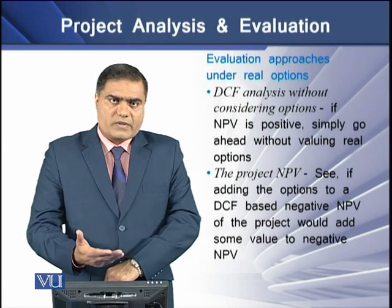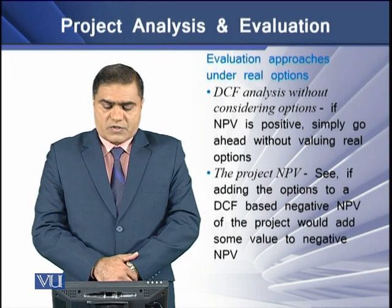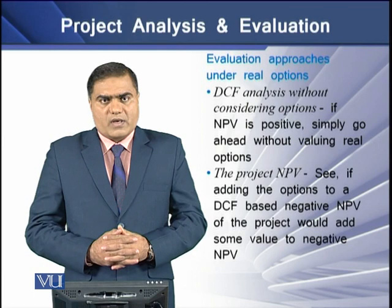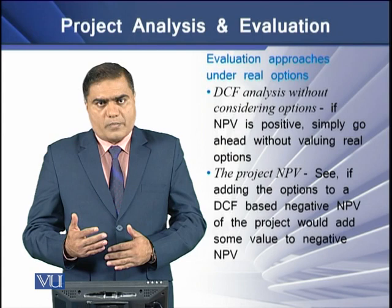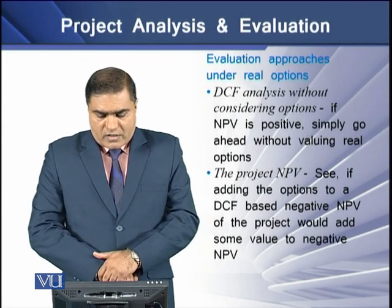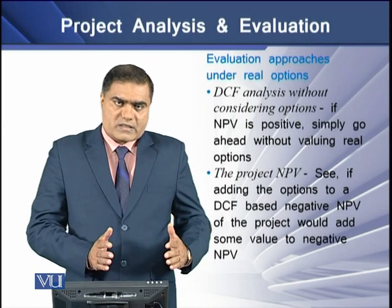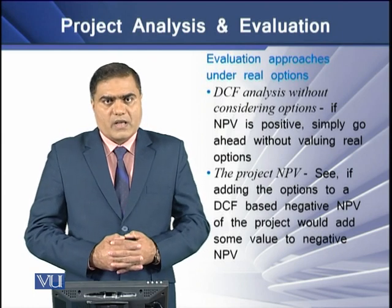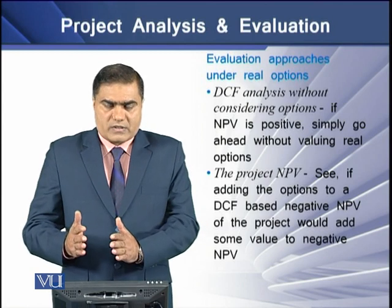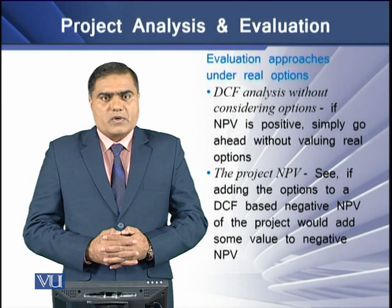How do we value the options available to a company during capital budgeting? The first evaluation approach is discounted cash flow analysis without considering options. If the DCF method reveals a positive NPV for the project, the company may not need to go for option analysis at all — simply, discounted cash flows are sufficient to accept the project. The second approach is the expanded NPV approach: if the project has a negative NPV, the company can analyze the financial worth of the available options. If the value of those options is greater than the cost of exercising them, the net value is added to the negative NPV. If the resulting figure is positive, the company may proceed with the project.